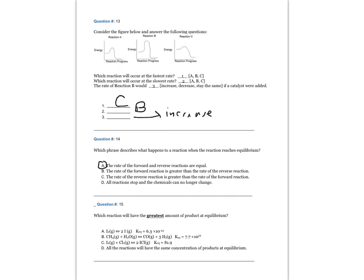Question number 15. Which reaction will have the greatest amount of product at equilibrium? The answer is B: CH4 gas plus H2O gas reacting to form CO gas and 3 moles of H2 gas, with an equilibrium constant of 10 to the 24th — that's much larger than the other two possibilities.